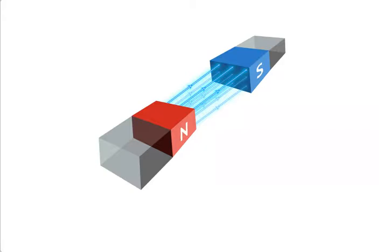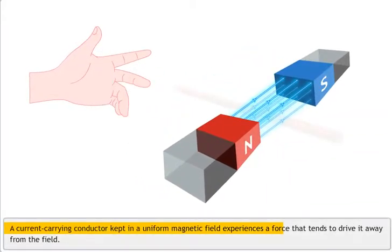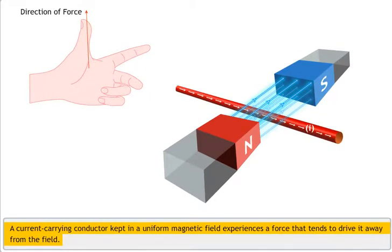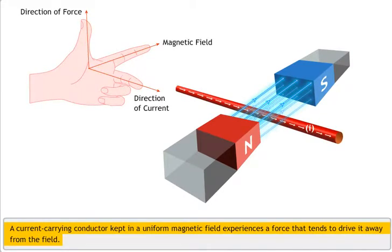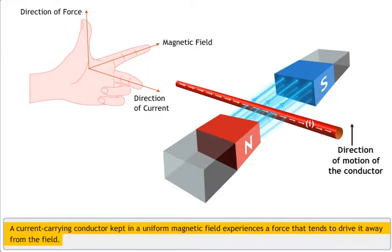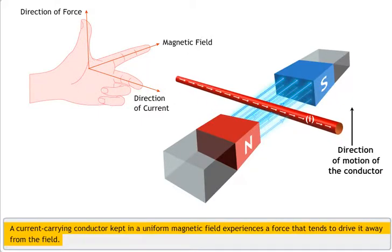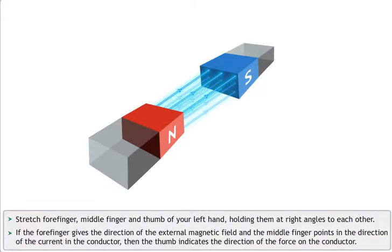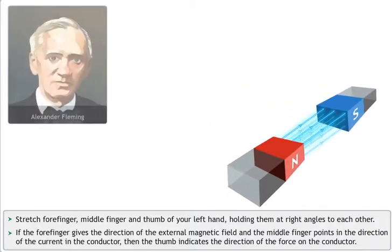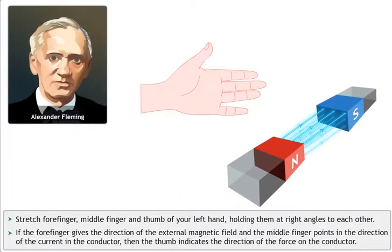A magnetic field exerts a force on the magnetic objects under its influence. Therefore, a current carrying conductor kept in a uniform magnetic field experiences a force that tends to drive it away from the field. The direction of the force on a current carrying conductor in a magnetic field can be determined using Fleming's left-hand rule.